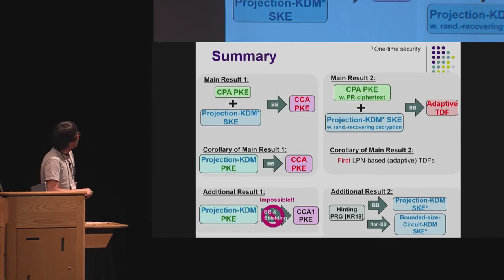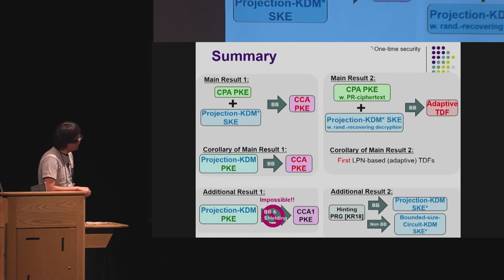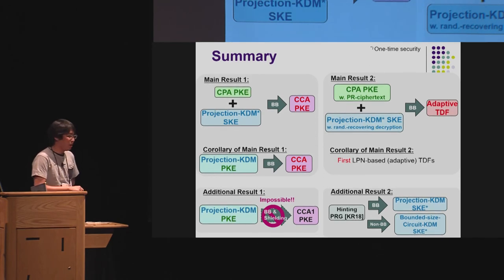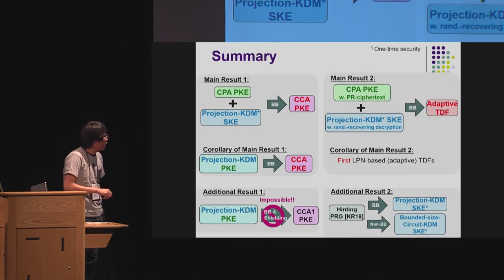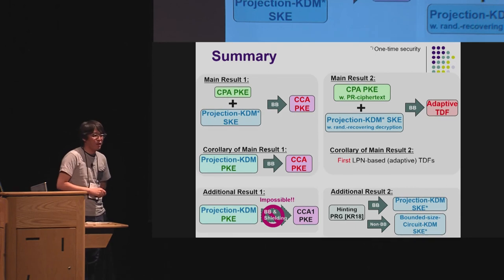These are our main results. We additionally have some impossibility results, and as I slightly mentioned, we also have implication results from hinting PRG to KDM-secure SKE. Thank you very much.